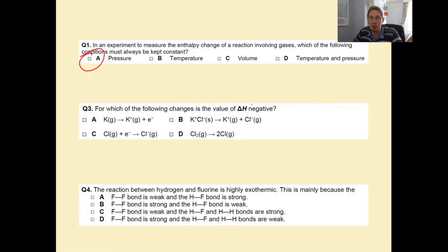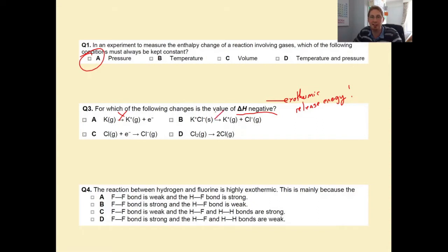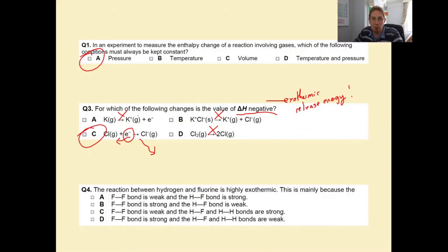For which of the following changes is the value of delta H negative? This means exothermic, so it's going to release energy. Removing an electron from potassium - no, that takes in energy. Splitting potassium chloride solid into gaseous ions - no, that requires energy. Splitting chlorine into two chlorine atoms - no, that requires energy. The one that happens naturally is the electron being attracted towards a neutral chlorine atom - that actually gives out energy, so that is the one with the negative delta H.